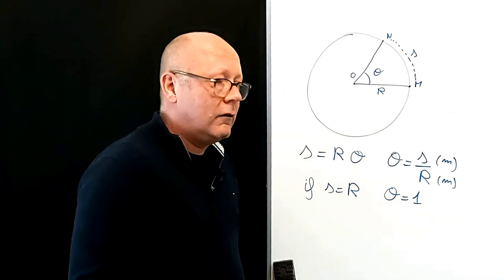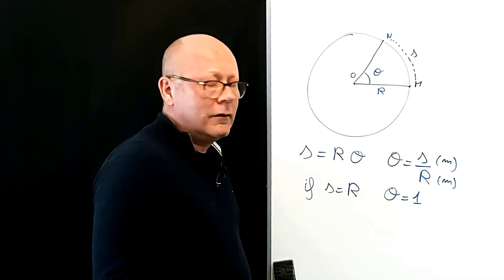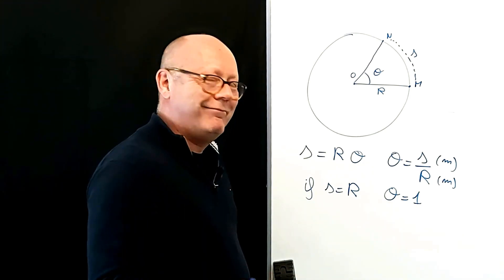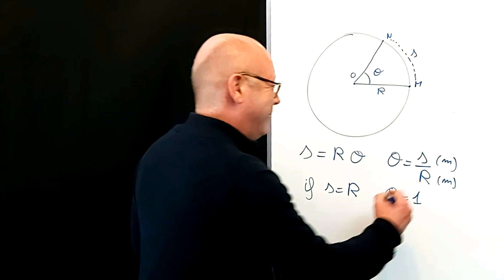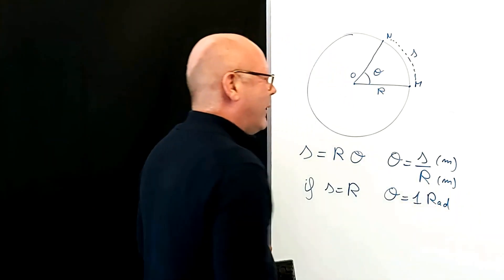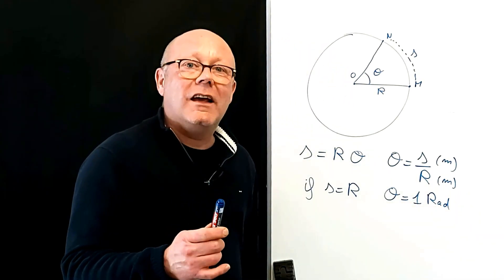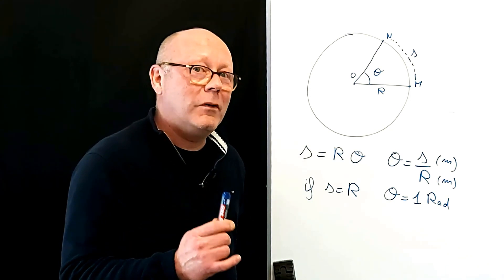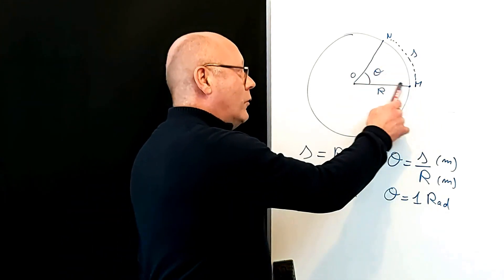We could use this as a unit. How shall we call it? The radian. The radian is the angle which is formed when the arc is equal to the radius.